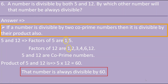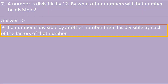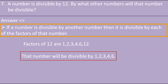Question 7: a number is divisible by 12 — by what other numbers will it be divisible? We apply Rule 1: if a number is divisible by 12, then it is divisible by each factor of 12. The factors of 12 are 1, 2, 3, 4, 6 and 12. So that number will be divisible by 1, 2, 3, 4 and 6. This completes the exercise.